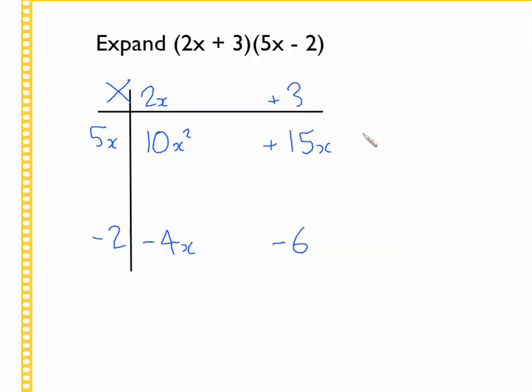Now everything that we've got as an answer in our multiplication grid, we just write out. So 10x squared plus 15x minus 4x minus 6. And we just combine the like terms. They're these ones on the diagonal. So we're left with 10x squared. We had 15x and we take four of them away. We're left with 11x. So plus 11x minus 6. And that is the answer to this question.